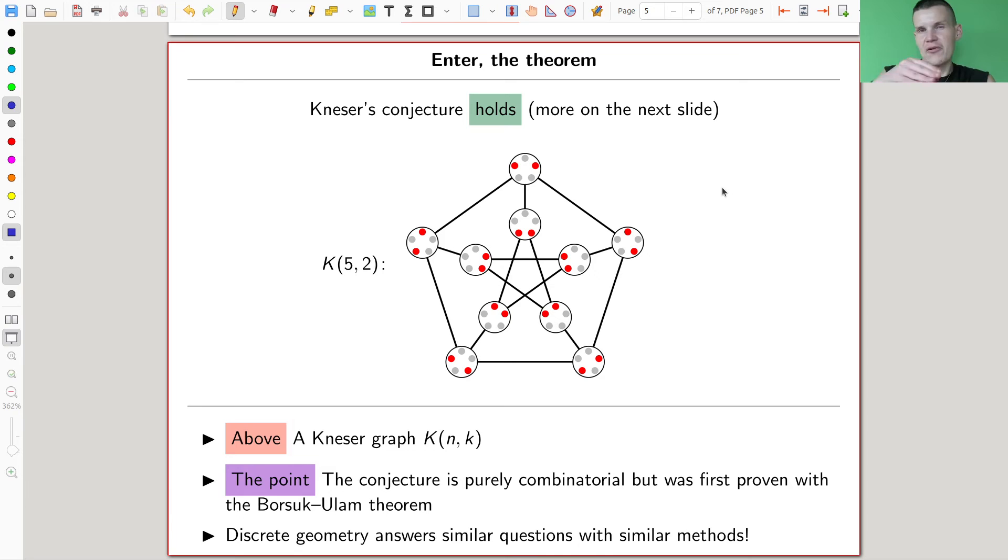Not necessarily, there's also more questions that you can discretize geometric objects or something that are also related. But for this video, that's kind of the point I would like to take. So it remains to show you what this funny Kneser conjecture is. Why is it funny? What the Kneser conjecture is.